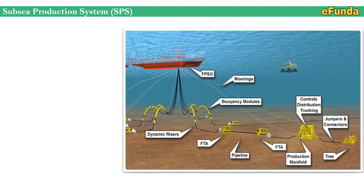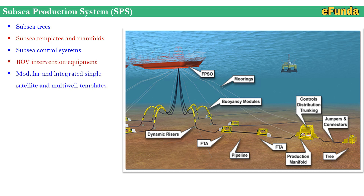Moving on to the subsea production system (SPS). One can refer to the picture showing complete system connections and production system components from the FPSO to the last end of the tree. The subsea production system includes subsea trees, subsea templates and manifolds, subsea control systems, ROV intervention equipment, modular and integrated single satellite and multi-well templates, subsea processing and subsea boosting stations, and flow lines.